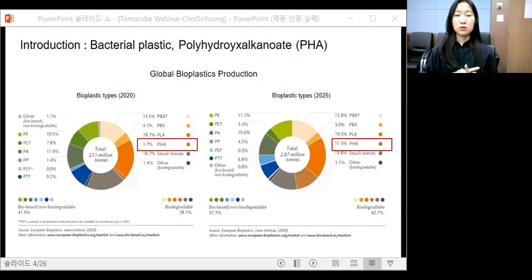This diagram shows the global bioplastic production. PHA is here. Last year, about 35,000 tons of PHA was produced, and it is predicted that the PHA production capacity will significantly increase within the next five years. So, as a next-generation bioplastic, more advanced technologies in PHA research should be required.